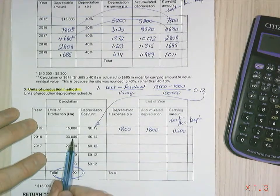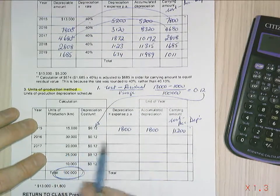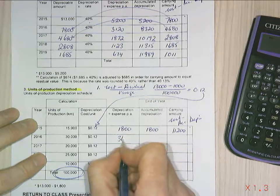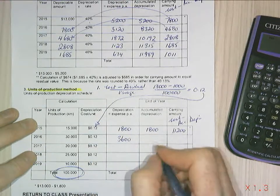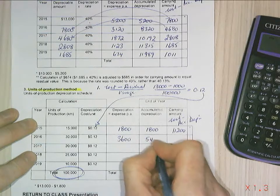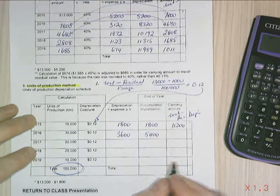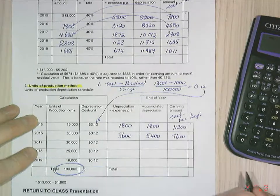Next year, I've used the vehicle for twice as many kilometres. So I'll come in at $3,600. I add my depreciations together to give me my accumulated depreciation of $5,400. And my carrying amount is $7,600.